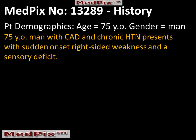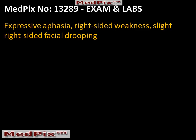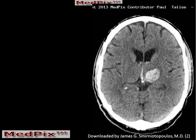Our patient this week is a 75-year-old man with a history of coronary artery disease and chronic hypertension. He presents with a sudden onset of right-sided weakness and a sensory deficit. Clinical examination confirms his right-sided weakness. He also has a right-sided facial droop and an expressive aphasia.